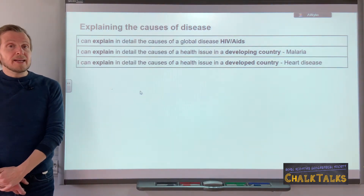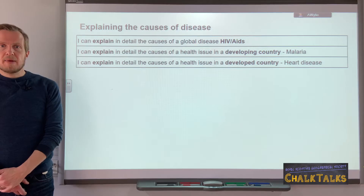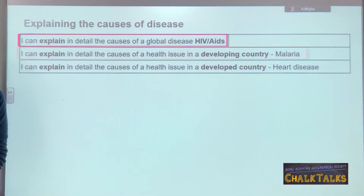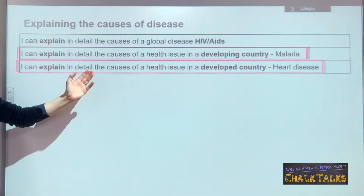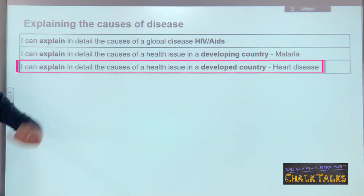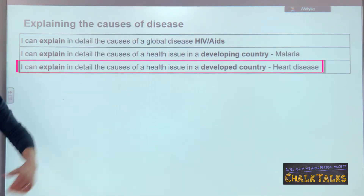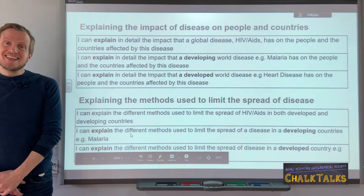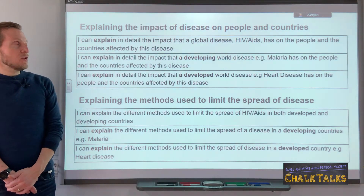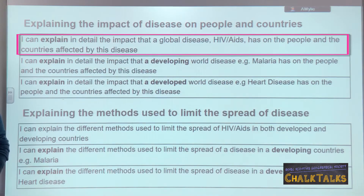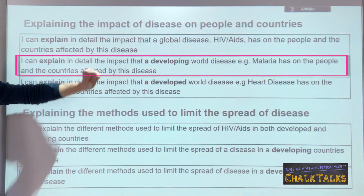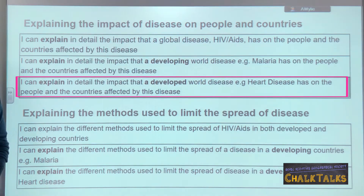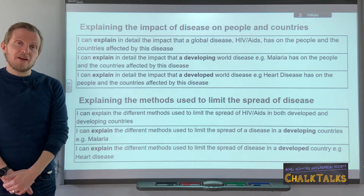The final theme relates to explaining the causes of one of the three main diseases you have studied. This could be the causes of HIV or AIDS, the causes of malaria — a developing country disease — or the causes of heart disease, which is a developed country disease. Linked to that is also explaining the impacts of a disease. You will need to know the impacts of HIV and AIDS, the impacts of a developing world disease like malaria, and the impacts of a developed world disease like heart disease. Impact is another word for the consequences or effects of a disease on a country or its people.